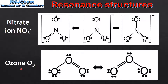Next we have the ozone molecule, which is O₃. As you can see there are two possible Lewis structures for the ozone molecule, and each one has the oxygen to oxygen double bond in a different position. The actual structure of these molecules is the resonance hybrid structure in which the bonds are intermediate in length and strength between a single and a double bond.